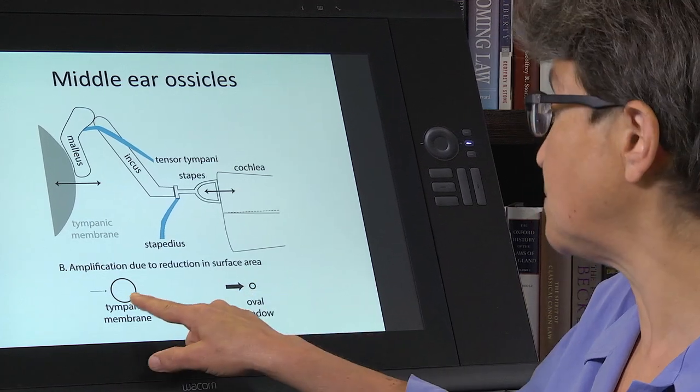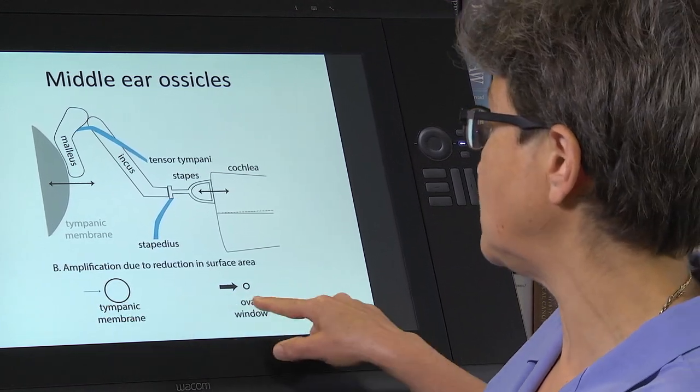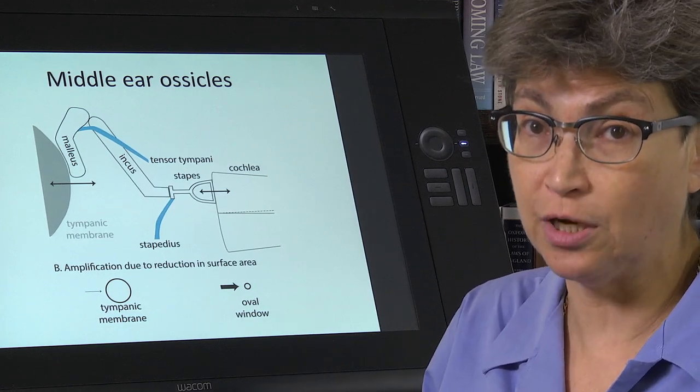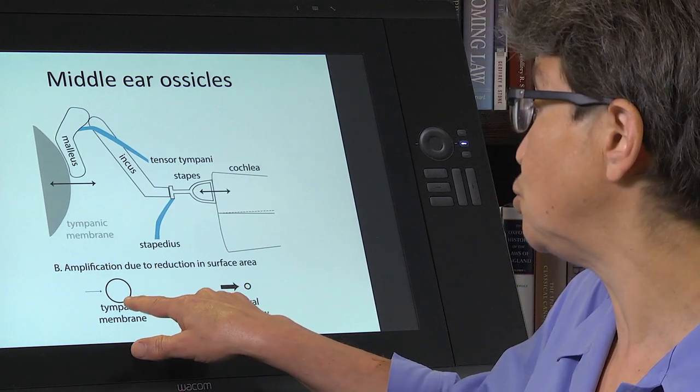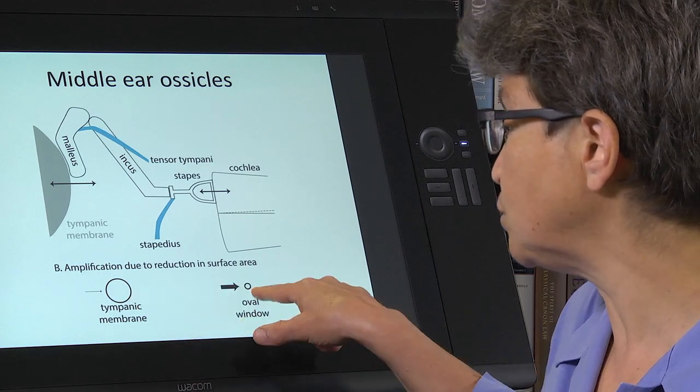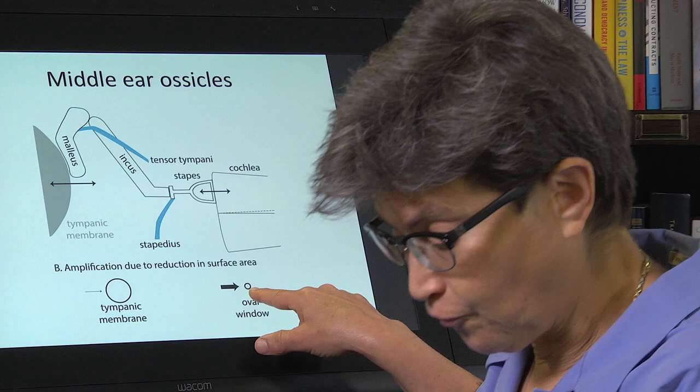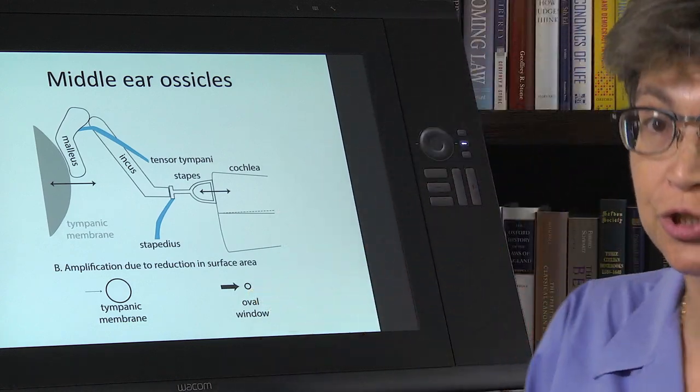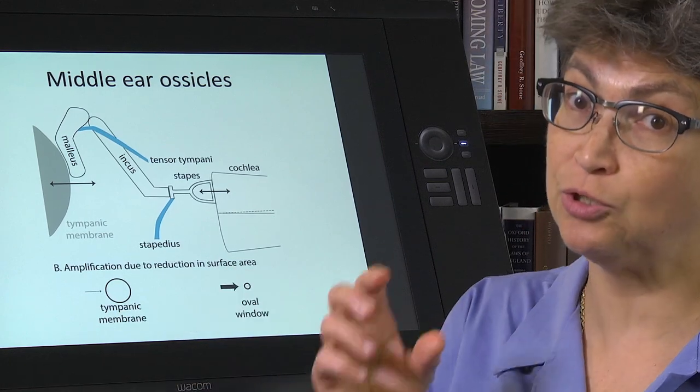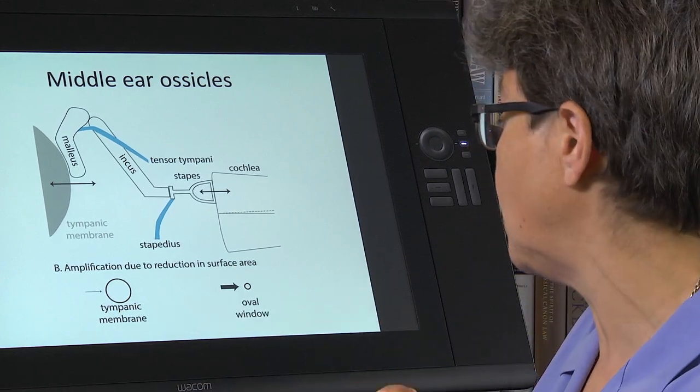So this is causing a 14 times concentration of energy just due to the change in surface area. So there's 14 times greater pressure per square area here than there. And that allows us to lose less energy than we would otherwise.